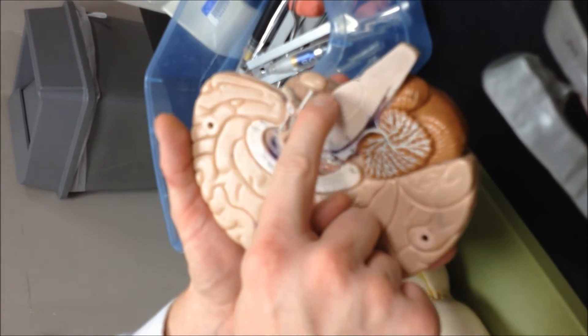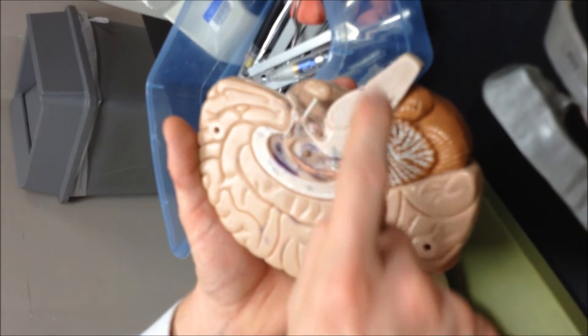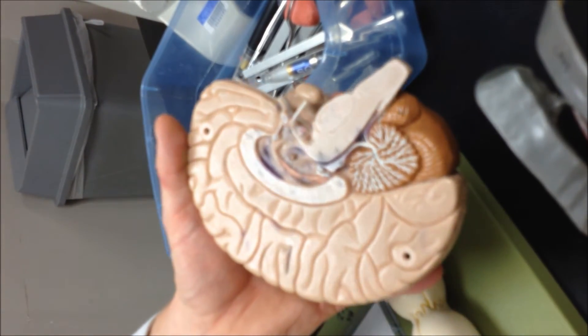All right. So if you start moving down the brain stem, the bump here is the pons. And then all the rest of this is the medulla oblongata until you get to the spinal cord.